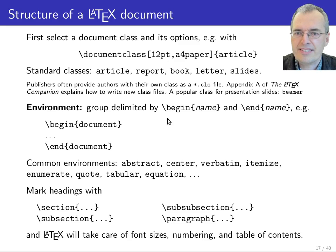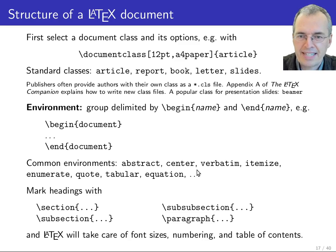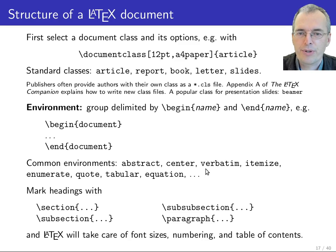An environment is anything between a begin and an end. Common environments include the document environment, which contains all the typeset content of your document. You can also use the abstract environment to put an abstract at the start. The center environment will center every single line, and you can separate lines with a double backslash.